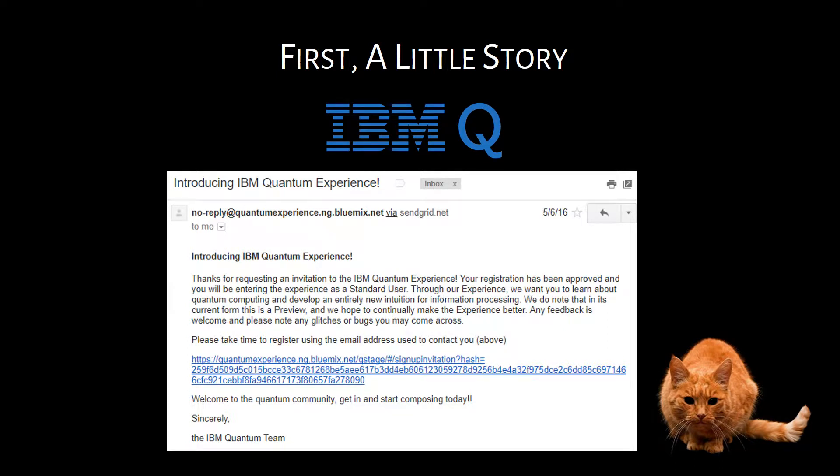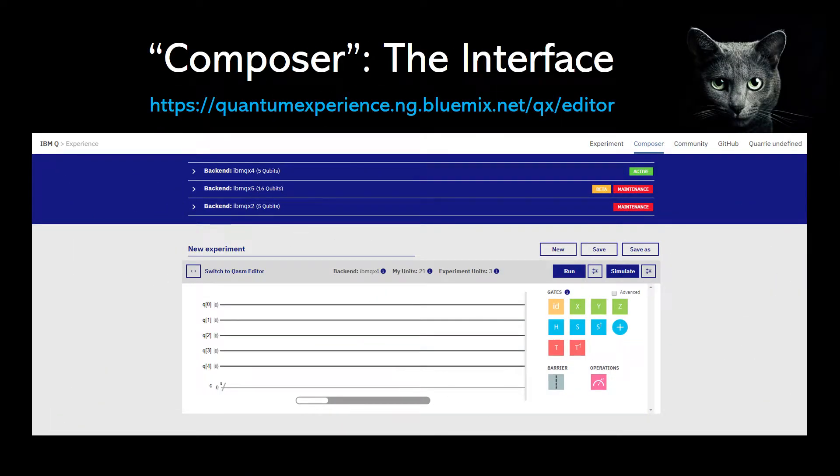I figured, since I knew so many classical programming languages and had taken tons of mathematics classes, programming a quantum computer would be a piece of cake. Right? You can imagine my surprise when I opened the interface. This is IBM's Composer. It's basically where you do all of your programming, but to me, it was the place where you stare in confusion. It turned out that none of my classical experience applied to quantum programming. I needed help. But I wasn't going to give up.